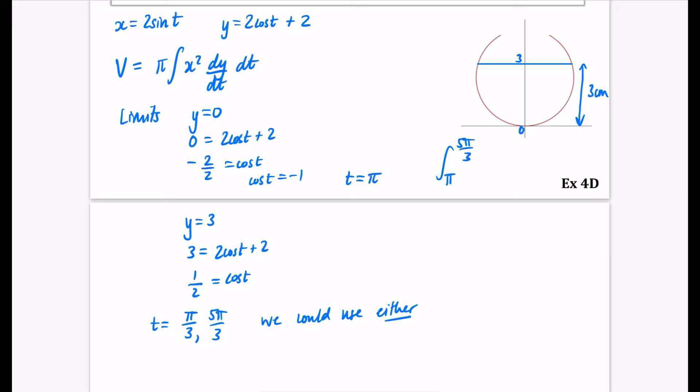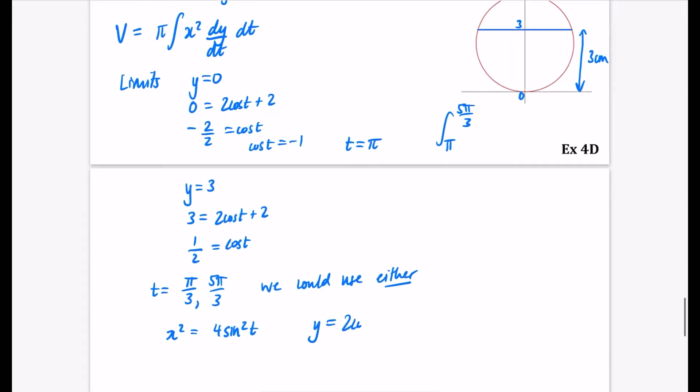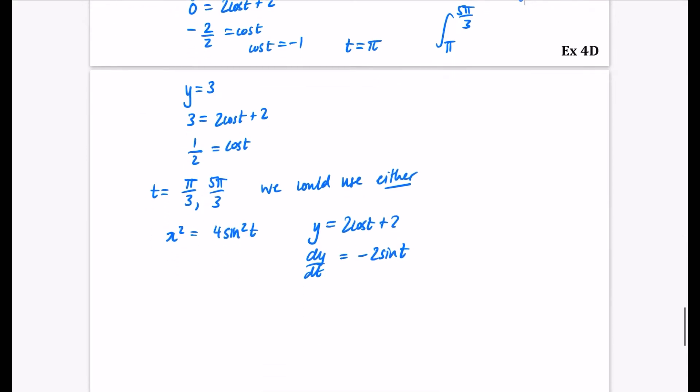Now what we need to do is some of the other parts, which is to do the x squared. So x squared is going to be pretty simple, right? That's just going to be 4sin²(t). And we also need to find out what dy/dt is. So that's 2cos(t) + 2. That means that dy/dt, cos differentiates to minus sine. So it's -2sin(t) that we've got there.